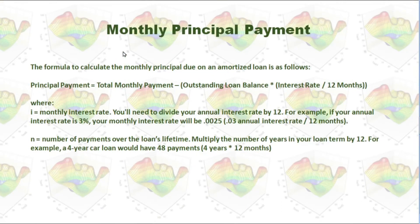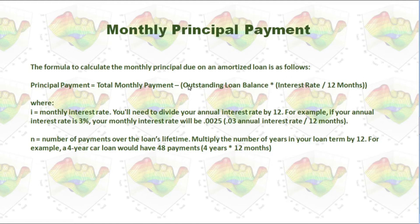How do we calculate the monthly principal payment? As mentioned, the total monthly payment is the same for every month. From this total monthly payment, we deduct the interest portion to get our principal payment. The interest portion is the outstanding loan balance times the interest rate for one month. If we deduct that from the total monthly payment, we will get our principal payment.